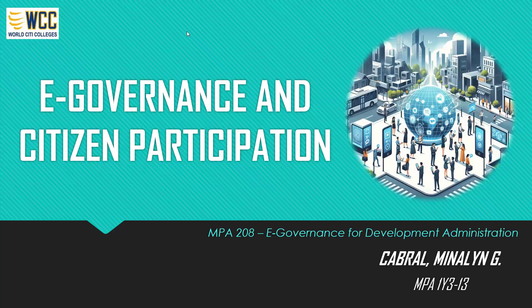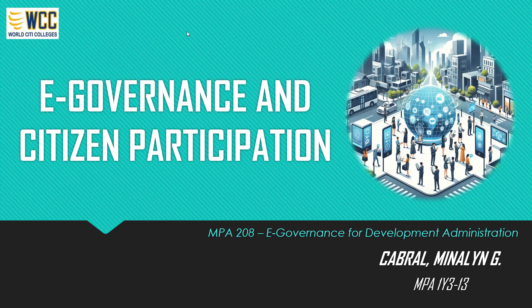This direct engagement empowers citizens to voice their opinions, contribute ideas, and hold government accountable for their actions. Moreover, e-governance initiatives can democratize access to information, enabling citizens to stay informed about government policies, initiatives, and expenditure. By digitizing government records and making them accessible online, governments can promote transparency and empower citizens to make more informed decisions about their communities and their representatives. Citizen participation in e-governance extends beyond mere information access to active collaboration in problem-solving and decision-making processes. Through crowdsourcing initiatives and online forums, citizens can co-create solutions to public challenges, offer suggestions for improvement, and collaborate with government agencies to implement innovative projects that address local needs.